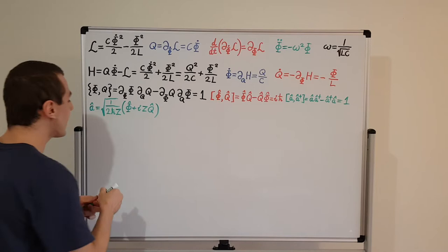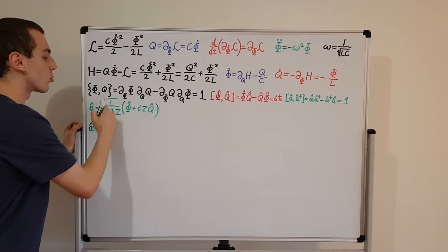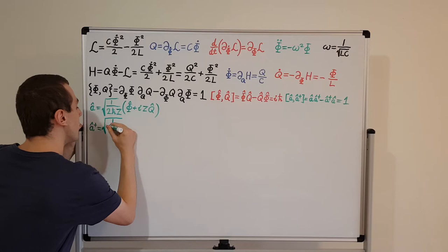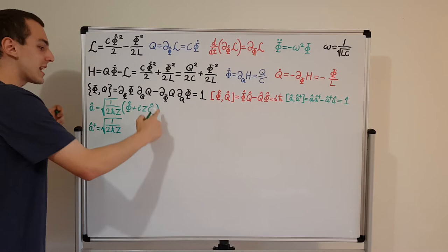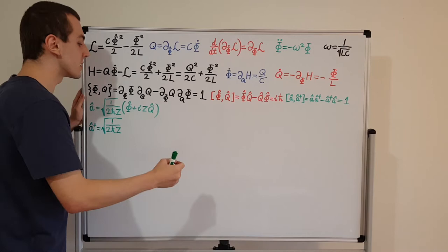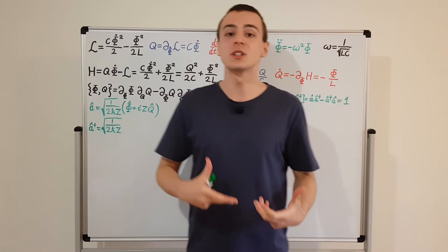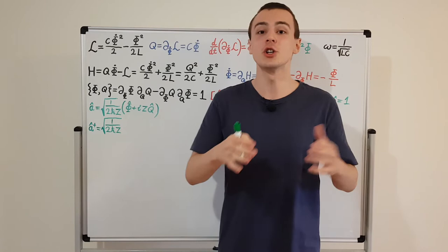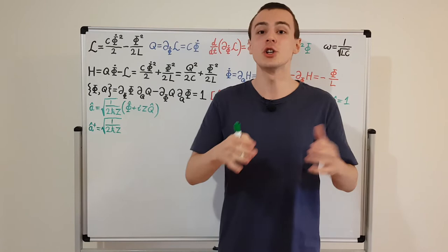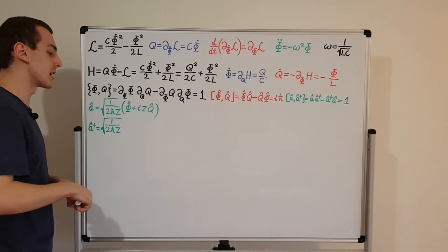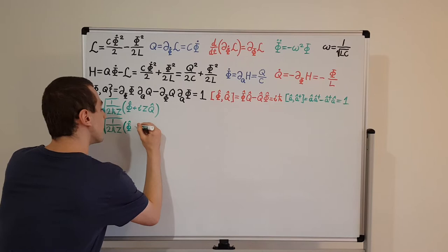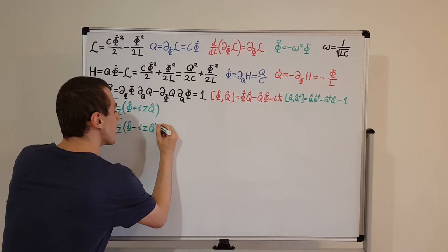Now I want to find a dagger — the Hermitian conjugate. All the real numbers out the front stay the same: we still have the square root of 1 over 2 h-bar Z. The Hermitian conjugate of phi and Q doesn't change them, because they are Hermitian operators — they are physical observables, and physical observables in quantum mechanics correspond to Hermitian operators. Phi equals phi dagger, Q equals Q dagger. But this i is going to change to minus i, because we take the complex conjugate. So a dagger has phi-hat minus i Z Q-hat.